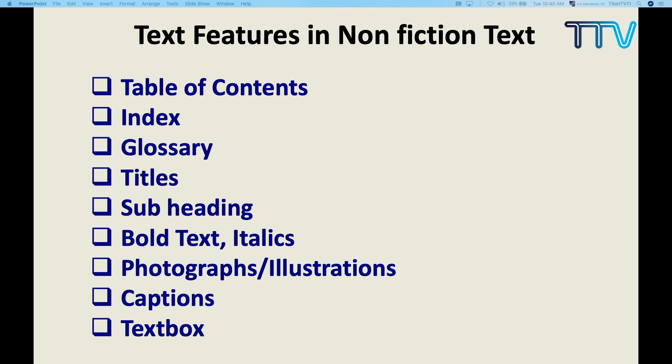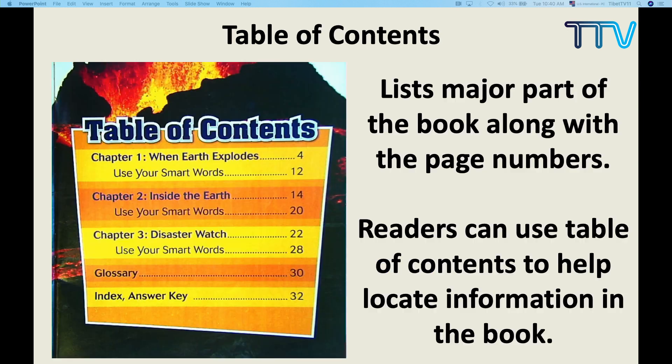I am going to take you through all these one by one very quickly. First: the table of contents. This is a text feature. The contents list major parts of the book along with page numbers. You should know why the contents are there. Readers can use the table of contents to locate information in the book, because all the page numbers are there and you get an idea of what the book is all about. The table of contents is the first text feature.